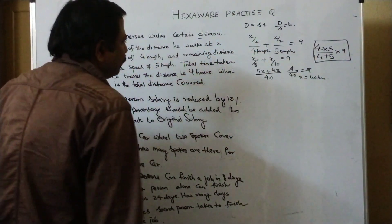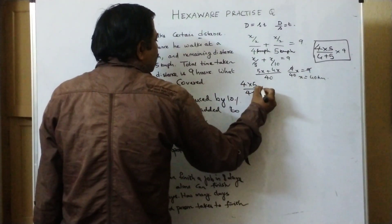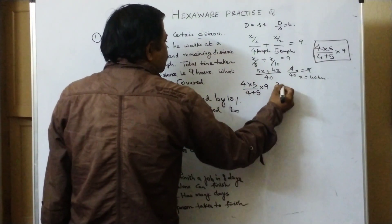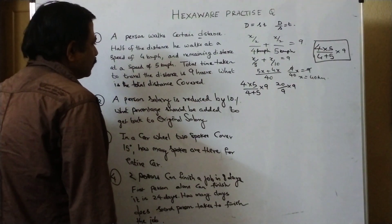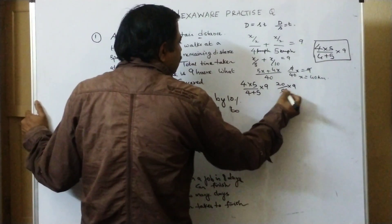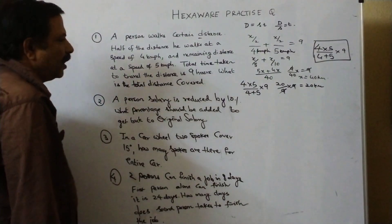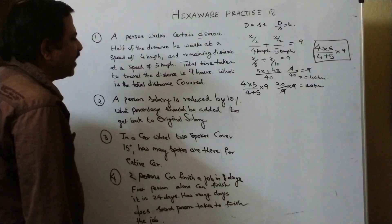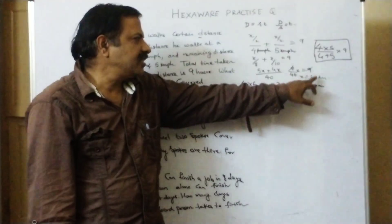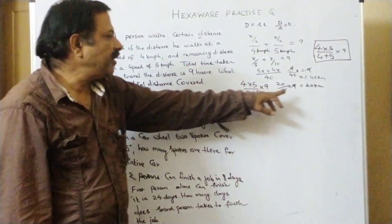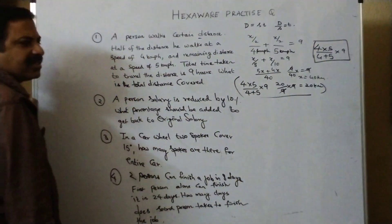And divide it by 4 plus 5. So product of the speeds by sum of the speeds into time, into 9. This is a trick, students. If you are able to solve it, the trick is 4 into 5 by 4 plus 5 into time. That is 20 by 9 into 9. 9s cancel. That's 20 km. This is half of the distance. Half of the distance is 20. Full distance will be 40. This is one method. Product by sum into time.